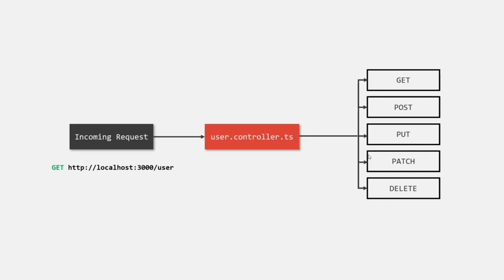For example, let's say from the client we are sending a GET request to a URL. After the root URL, we are also specifying this user route parameter, so 'user' is the resource here. Everything up to port 3000 is the root URL. To handle this request, we will have a controller called UserController, and inside it we will have logic to handle any type of request — GET, POST, PUT, PATCH, DELETE, and so on.